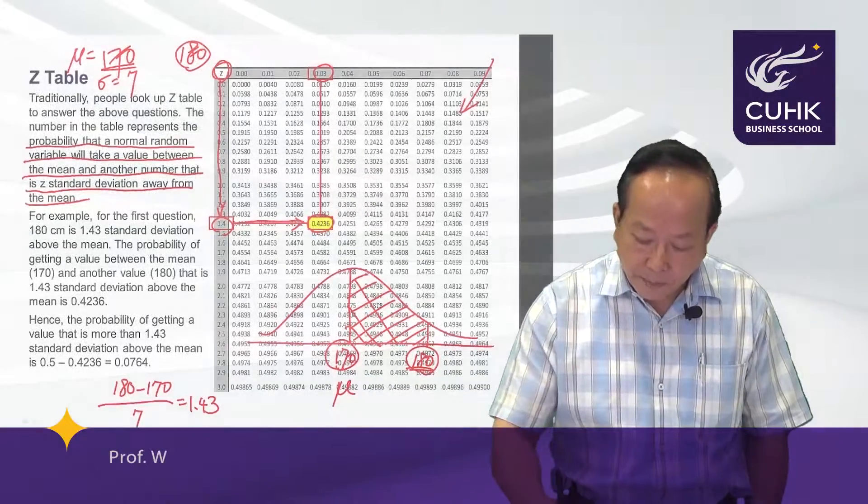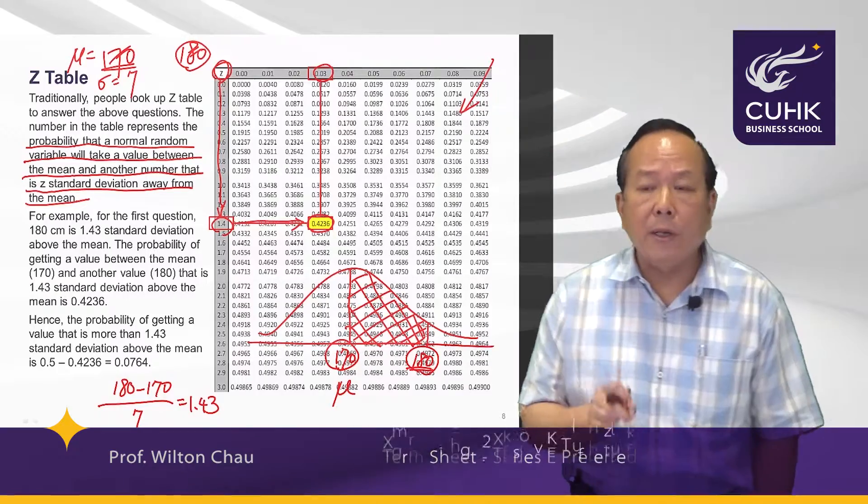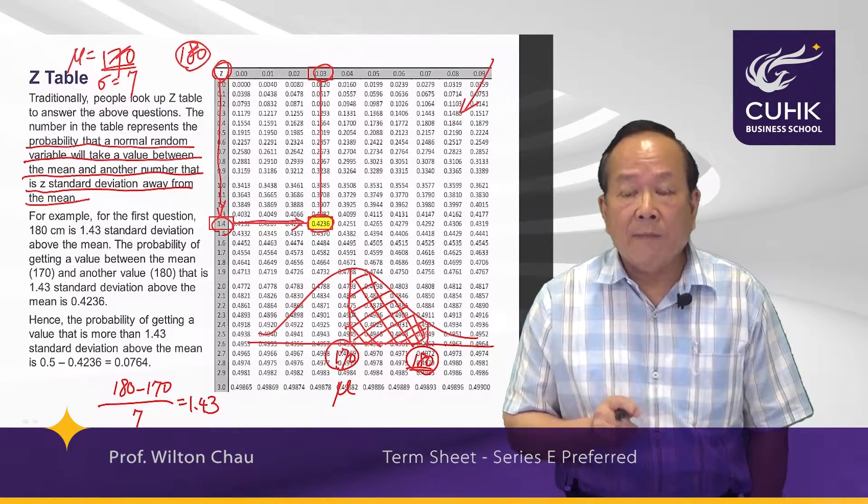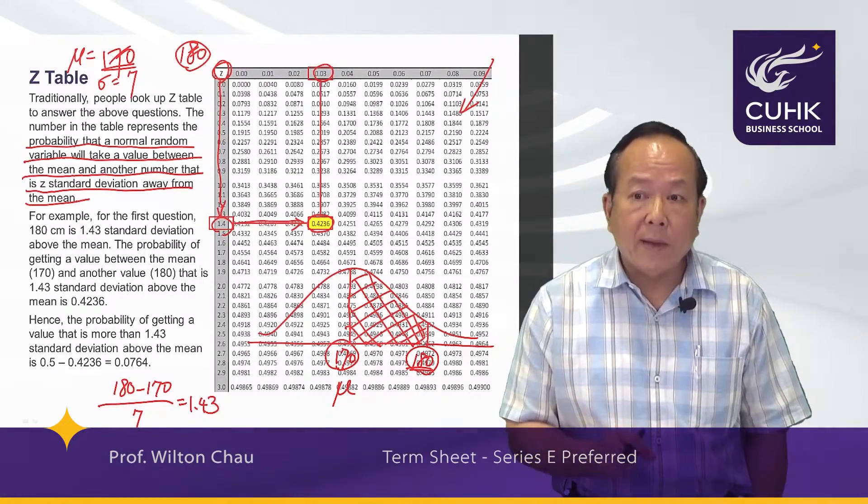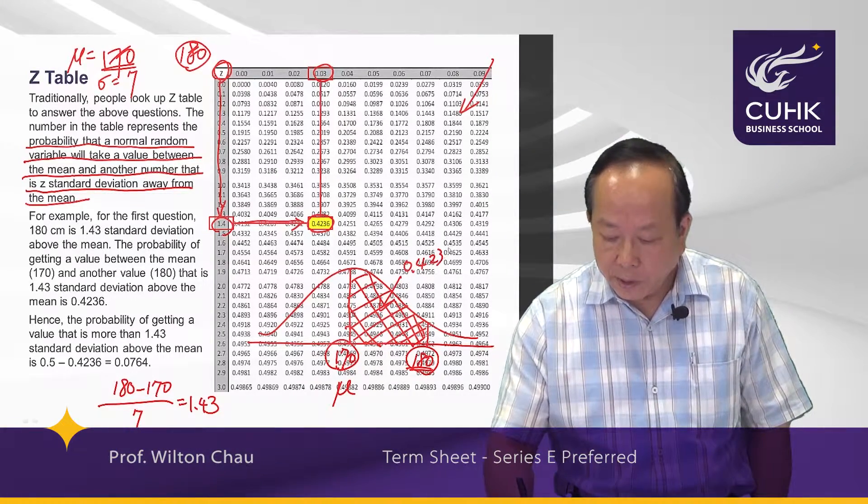It's the probability of this shared region. In other words, this is the probability that a randomly chosen person will have a height between 170 and 180. So this area is 0.4236.